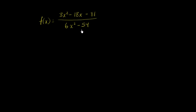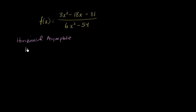Let's think about each of them. Let's first think about the horizontal asymptote — see if there is at least one. The horizontal asymptote is really the horizontal line that f(x) approaches as the absolute value of x approaches infinity. Or you could say, what does f(x) approach as x approaches infinity, and what does f(x) approach as x approaches negative infinity?